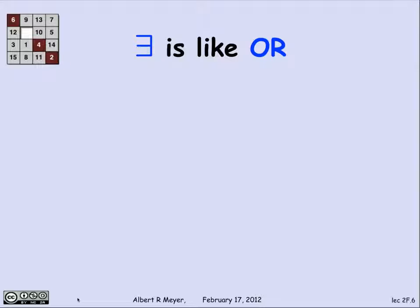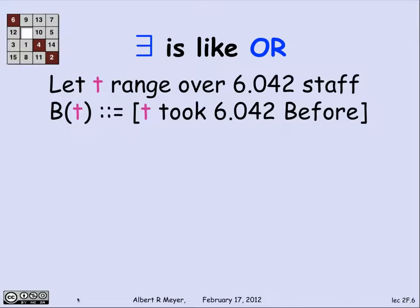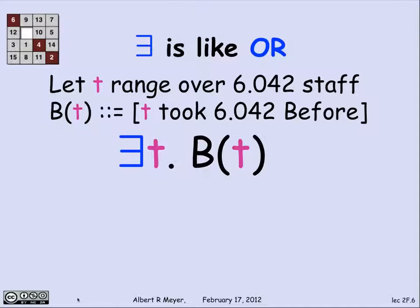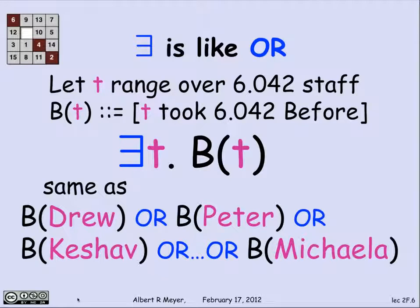Similarly, the backward E 'there exists' acts like an OR. If T ranges over the 6.042 staff and B of T means that staff member T took 6.042 before, then 'there exists a T such that B of T' means either Drew took it before, or Peter took it before, or Keshav took it before, or Michaela took it before. This statement is true because several staff members took 6.042 before.